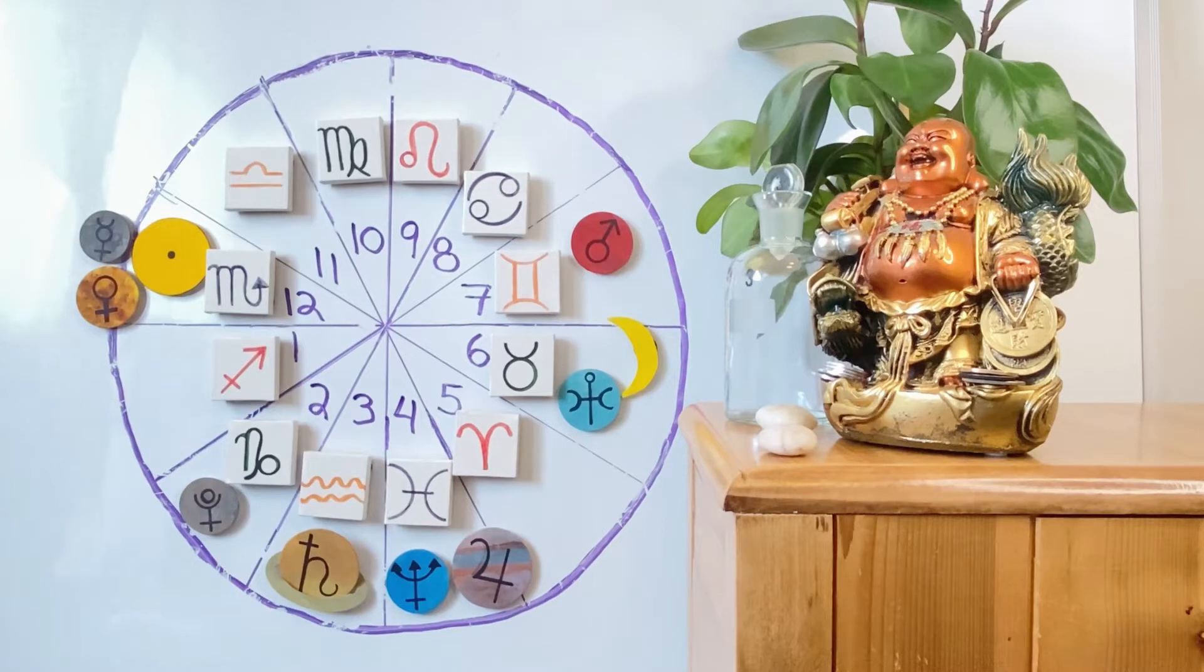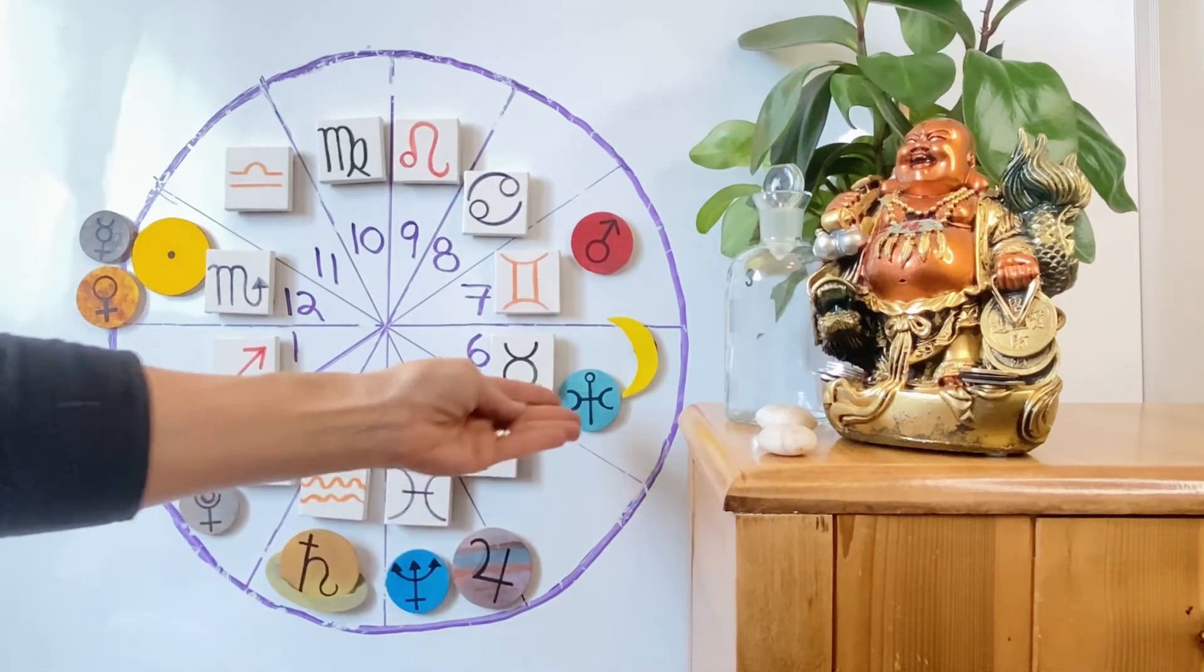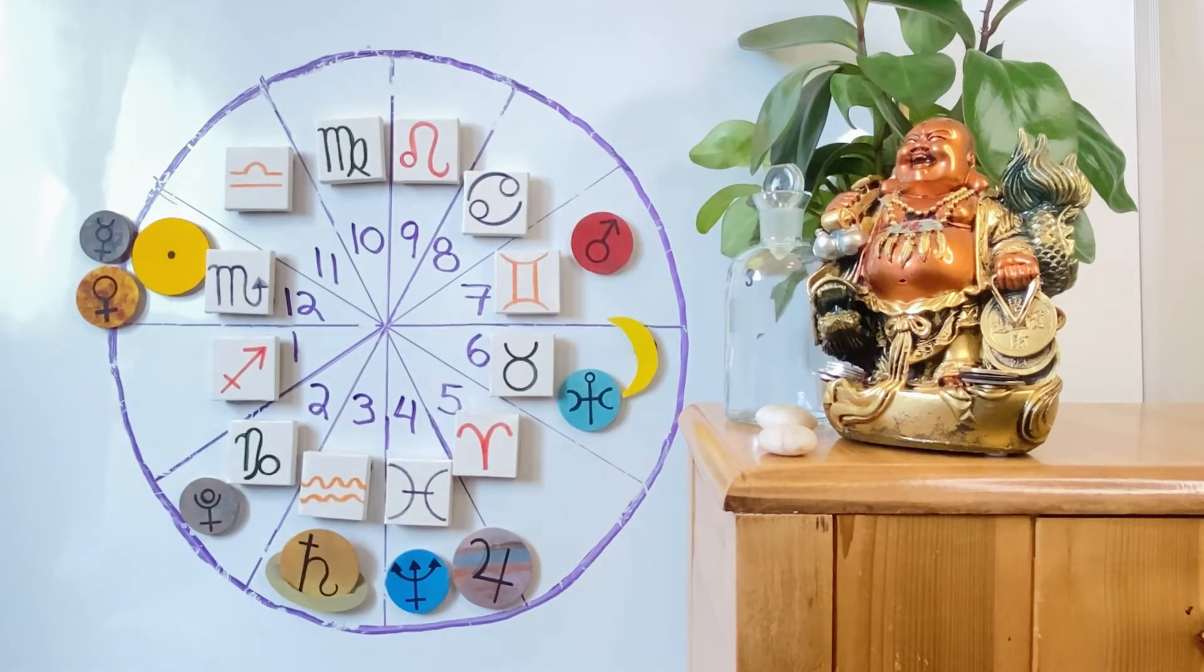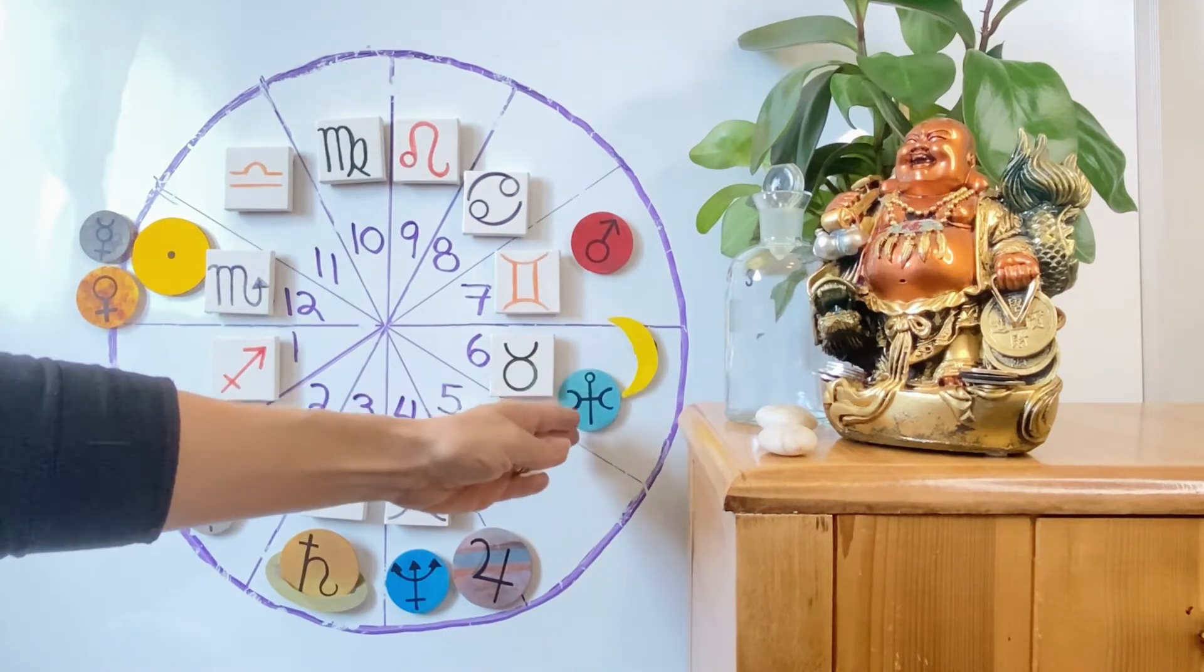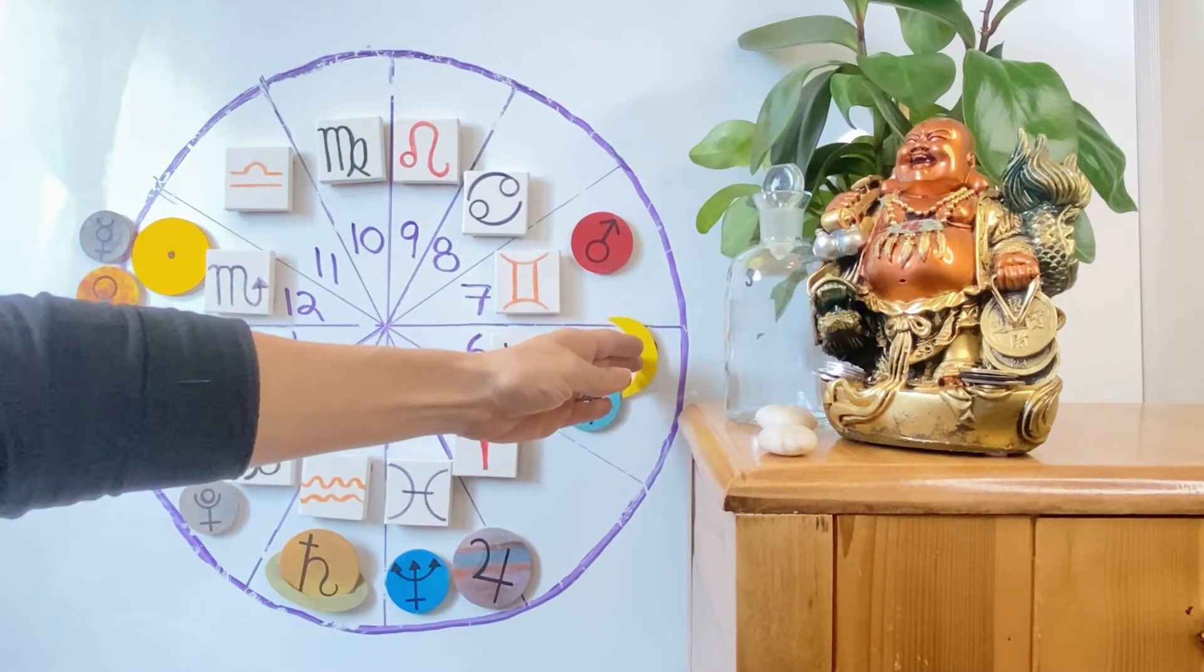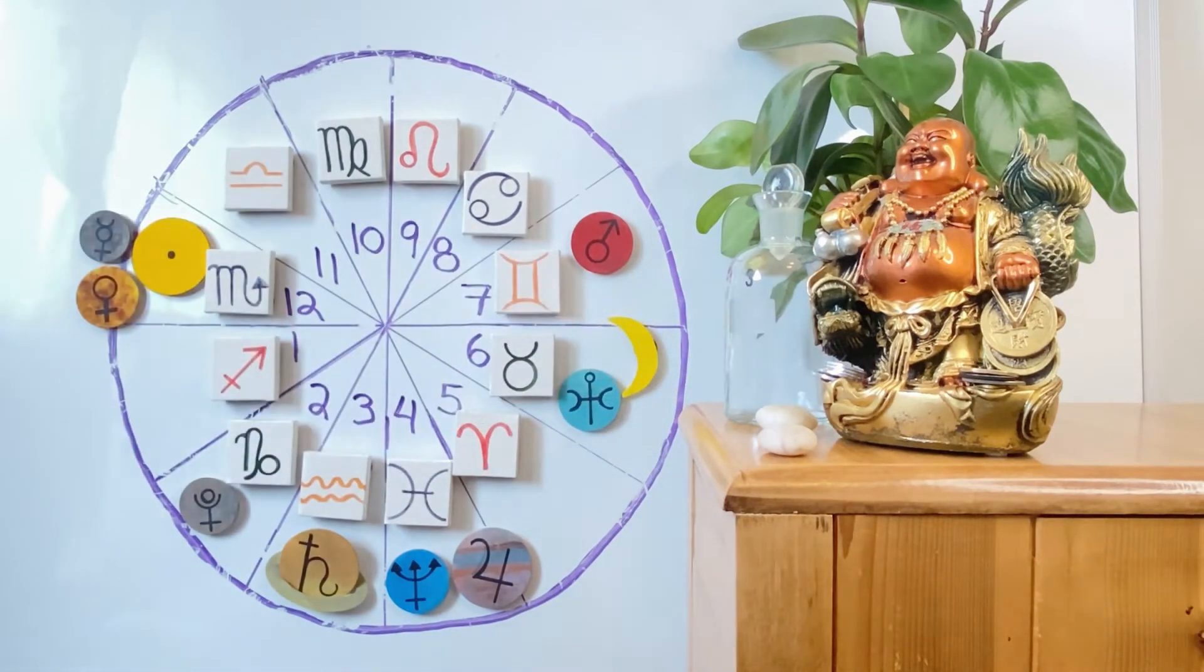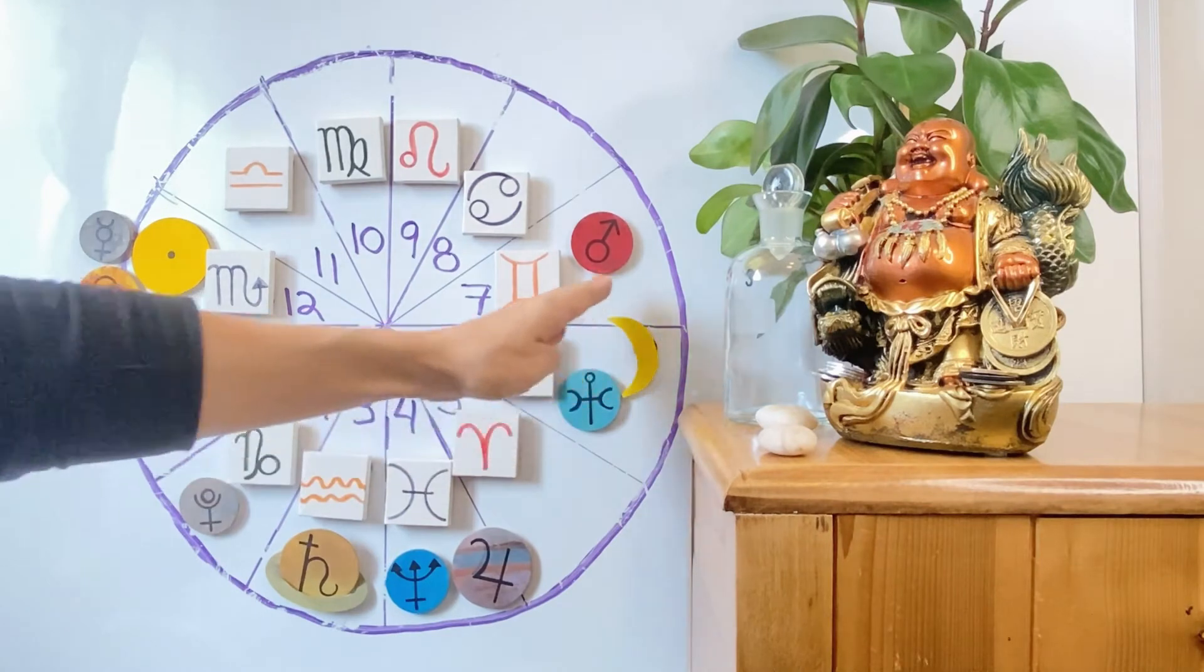Uranus is unforeseen events, things that sometimes we provoke because Uranus wants us to break free. Uranus follows Saturn and wants us to break free from the rules and regulations and structure of Saturn. It's called the planet of rebellion, the great disruptor, the great tension reliever, because when we just can't take any more of do this like this, do that like that, this has to be like this, this is the rule, this is the regulation.